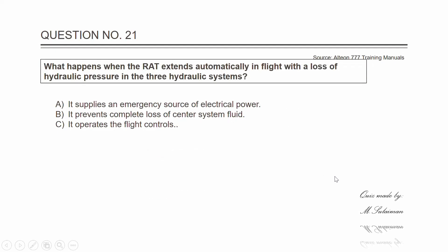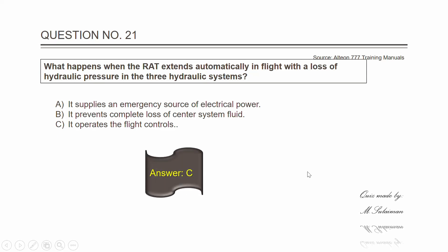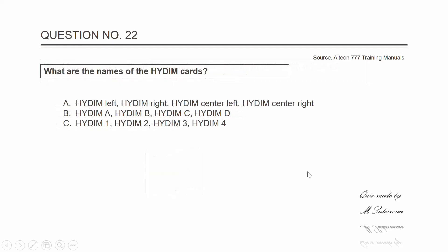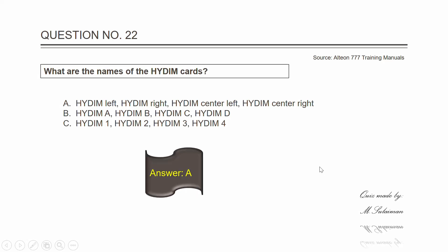Question twenty-one: what happens when the RAT extends automatically in flight with the loss of hydraulic pressure in all three hydraulic systems? The answer is C — it operates the flight controls. Question twenty-two: what are the names of the HIDEM cards? The answer is A — HIDEM left, HIDEM right, HIDEM center left, and HIDEM center right.